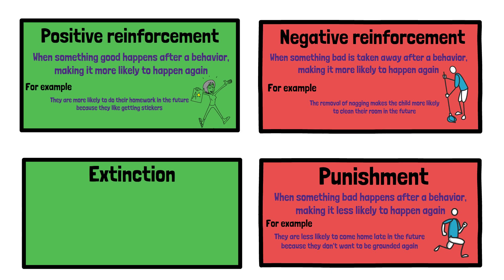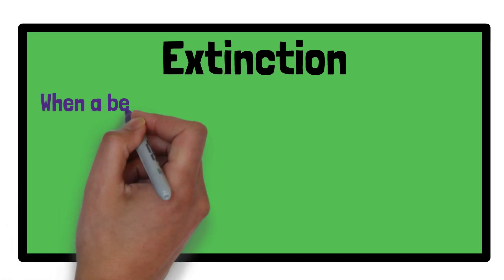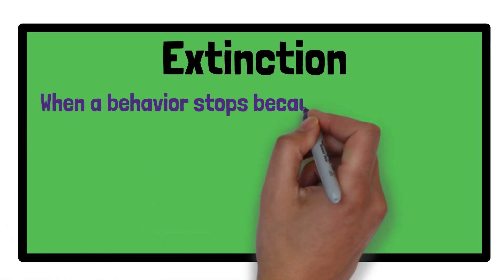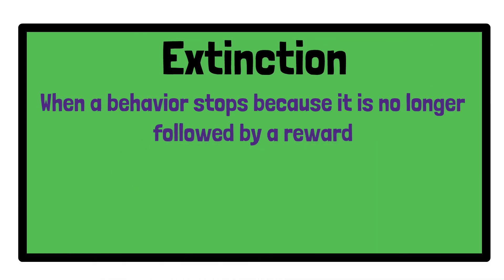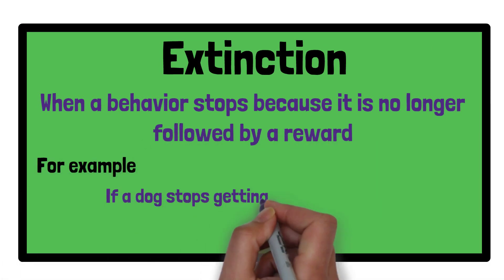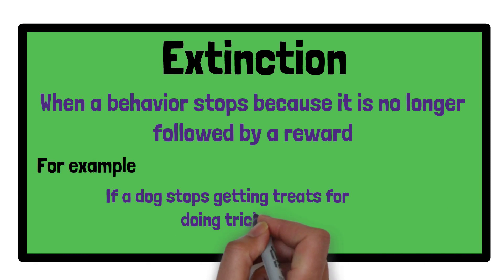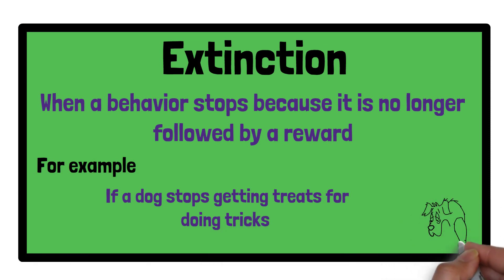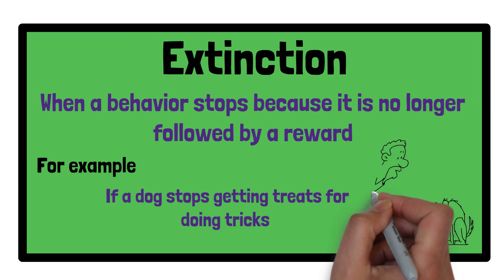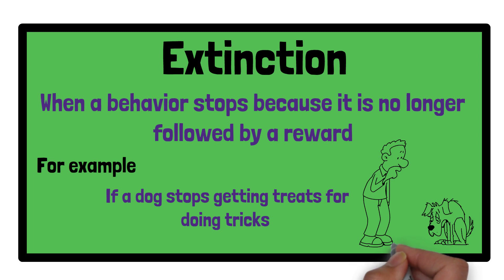Extinction is when a behavior stops because it is no longer followed by a reward. For example, if a dog stops getting treats for doing tricks, it might eventually stop doing tricks because it no longer expects a reward.